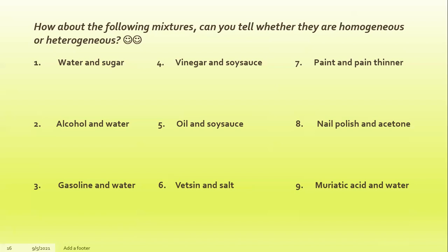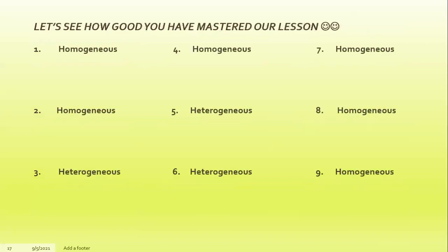Are you ready with your answers? Let's check it out. You can check your own work or ask somebody to check based on our answer key. Number one: homogeneous. Two: homogeneous. Three: heterogeneous. Four: homogeneous. Five: heterogeneous. Six: heterogeneous. Seven: homogeneous. Eight: homogeneous. Nine: homogeneous.